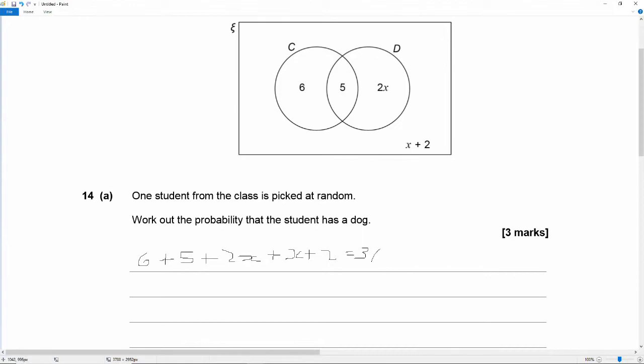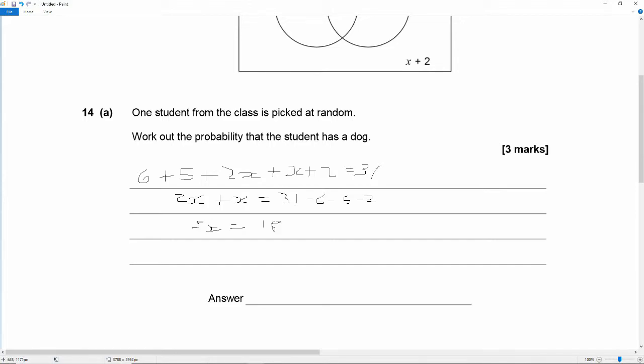Gathering like terms, keeping the x's on the left and the numbers on the right. So 2x plus x equals 31 minus 6 minus 5 minus 2. So 3x equals, 6 plus 5 is 11, 11 minus 31 is 20, 20 minus 2 is 18. So if 3x is 18 then x equals 6.